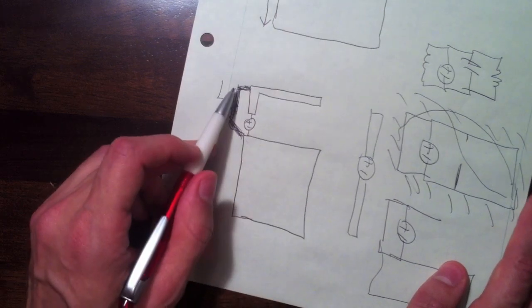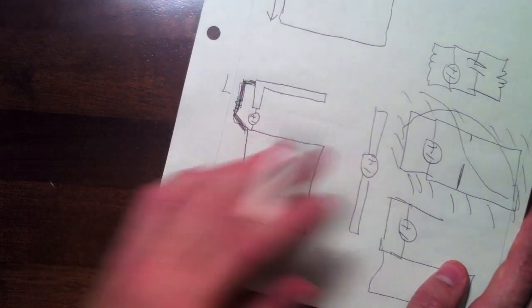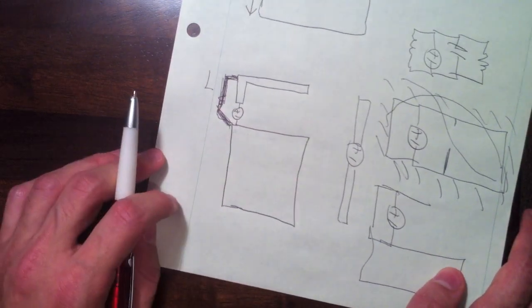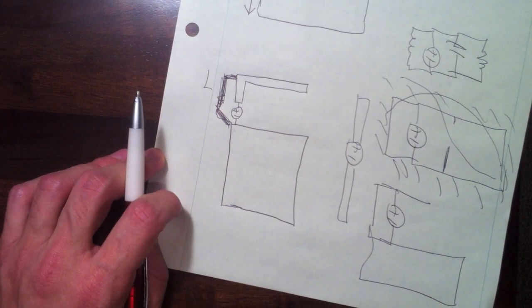So this antenna here is kind of a mixture of a slot antenna, half a slot antenna with a ground plane below it, and also evolved from a dipole antenna.